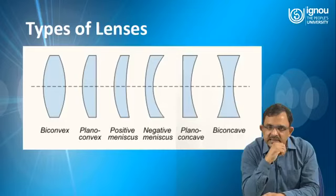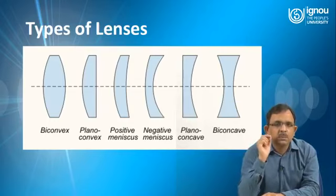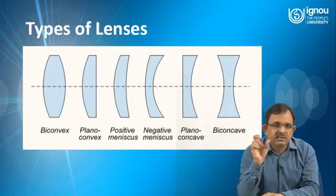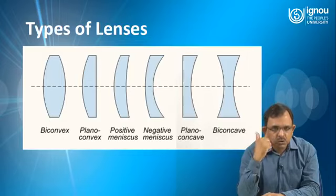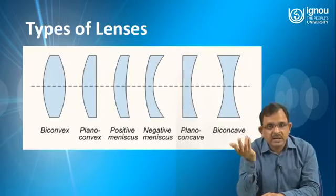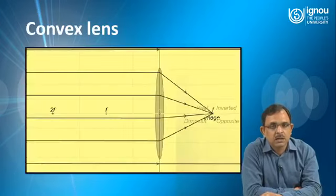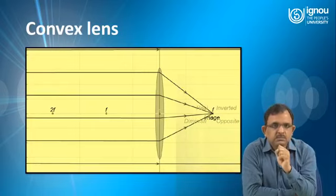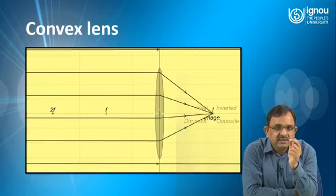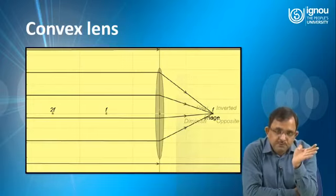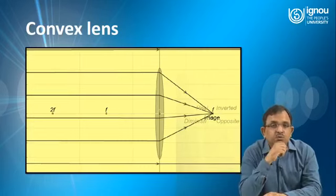Students at the elementary level have already understood what lenses are and generally have studied about six types: bi-convex, plano-convex, positive meniscus, bi-concave, plano-concave, and negative meniscus — used for different purposes. When talking about convex lenses, you again need to introduce terminologies like focus, incident ray, refracted ray, 2F, and centre of curvature before asking students to draw ray diagrams. The same applies to concave lenses.